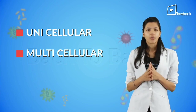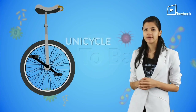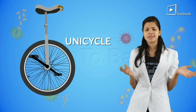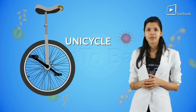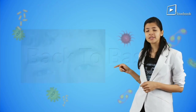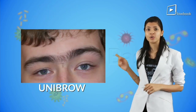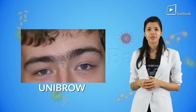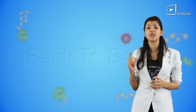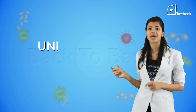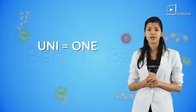Now, when a cycle has one tire, isn't it called a unicycle? When a person has one brow, he is said to have a unibrow. From these prefixes, we understand that the word 'uni' stands for one.